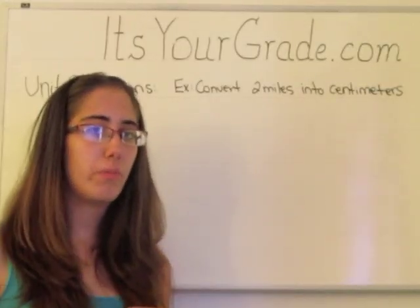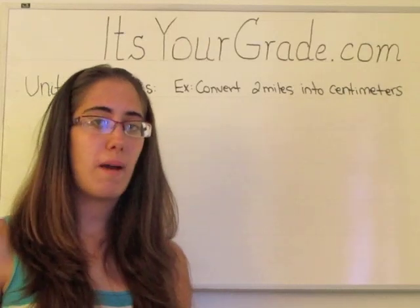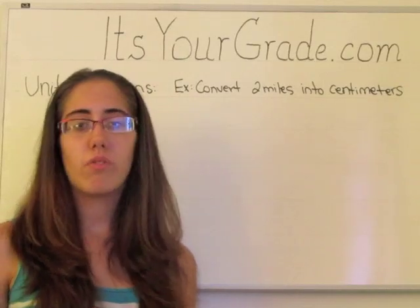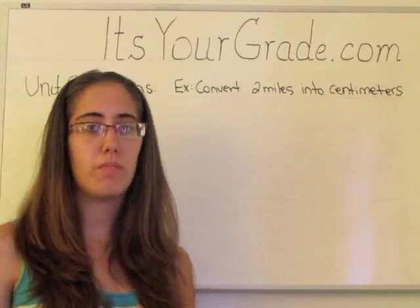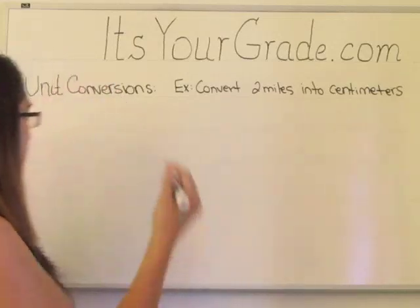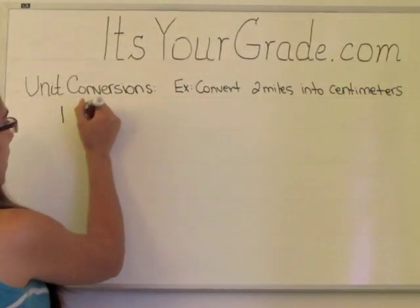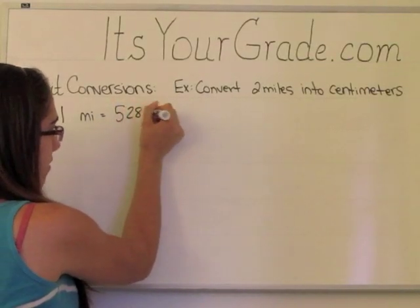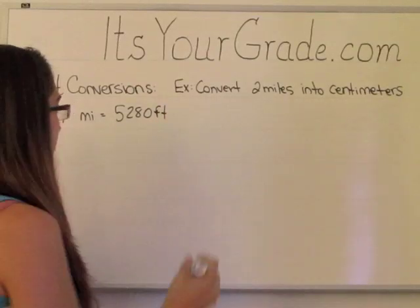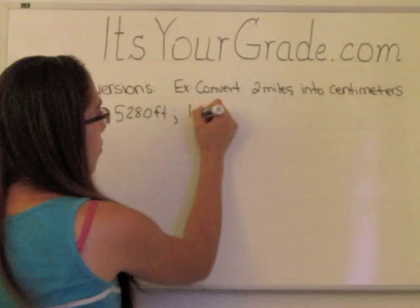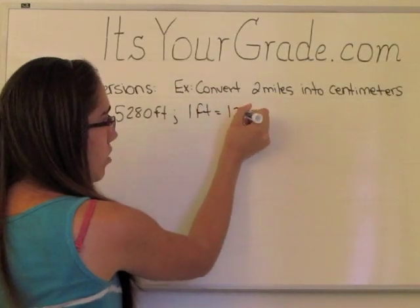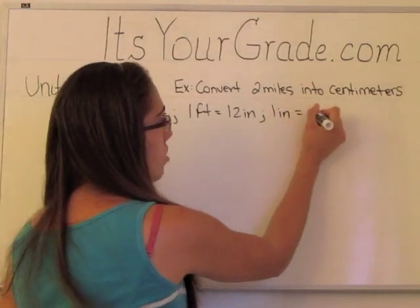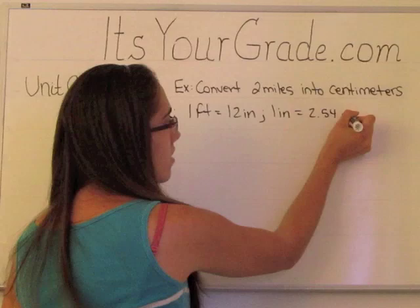First, you need to figure out what you know. There are conversions in the back of your textbook or sometimes in the front for quantities such as mass, volume, and length. We know that one mile has 5,280 feet. We also know that one foot has 12 inches. We know that one inch has 2.54 centimeters.